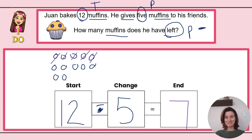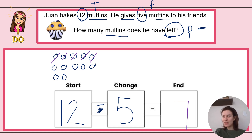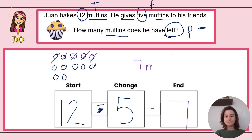Seven — but seven what? Remember, this is a story problem, so we have to answer in a complete sentence or indicate what seven means. Seven fish? Seven Minecraft games? We are talking about muffins here. How many muffins does he have left? Seven muffins. You could write "Juan has seven muffins left" or just "seven muffins" — that's perfectly acceptable.